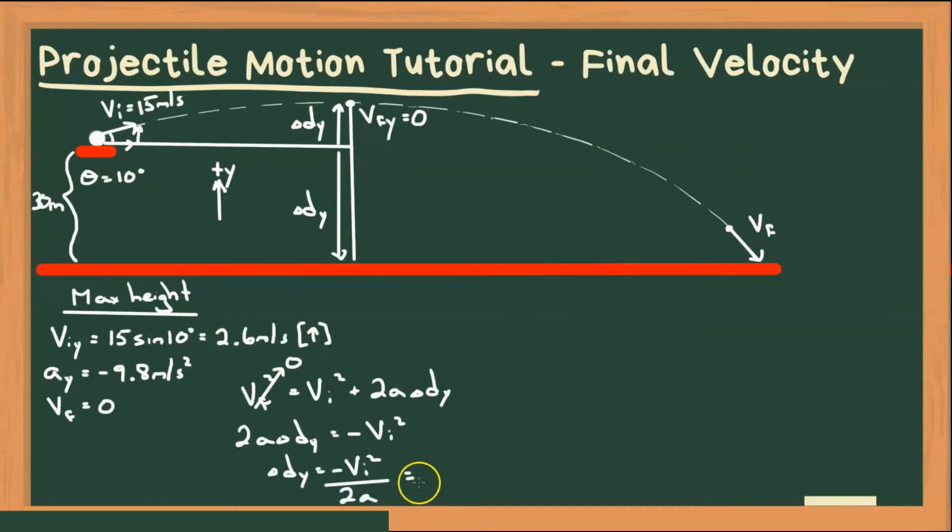Now if we use the values we have in this question, that is going to be negative 2.6 meters per second squared, all over 2 times by gravity, which is down, so negative 9.8 meters per second squared. And we put that into our calculator, and we'll get a displacement of 0.34 meters. Now it's a positive value, so that means it's up. So that means this displacement went up 0.34 meters. Now if we want to know maximum height from the ground, then we're going to have to add the height from where we started from. So our maximum height then is going to be 30.34 meters. And that's how you can find maximum height.